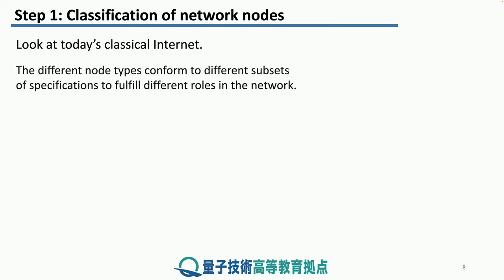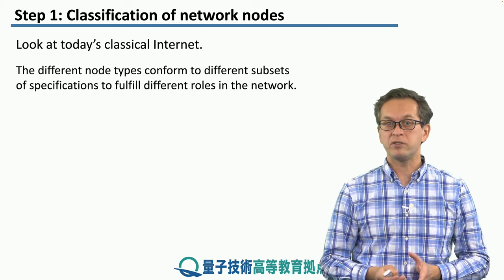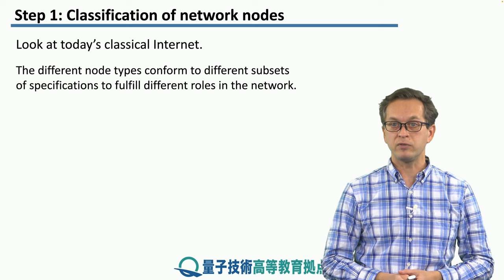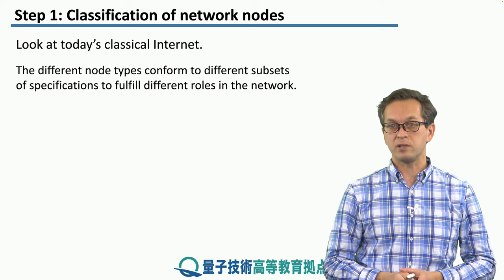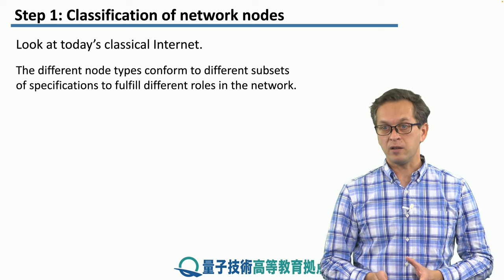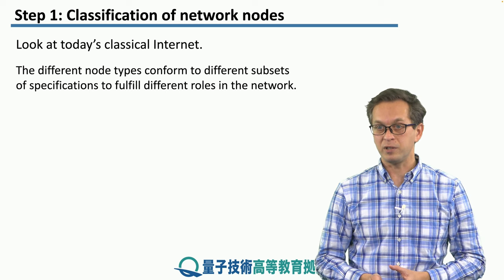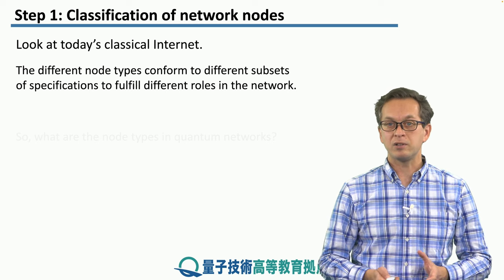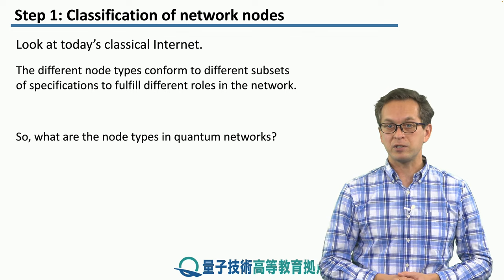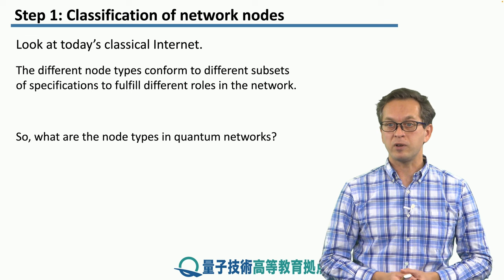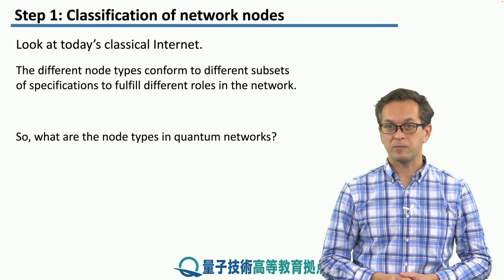Now, the different node types conform to different subsets of specifications to fulfill different roles in the network. The classical internet is a little different from the quantum internet. So let's ask the question: what are the node types of a quantum network?